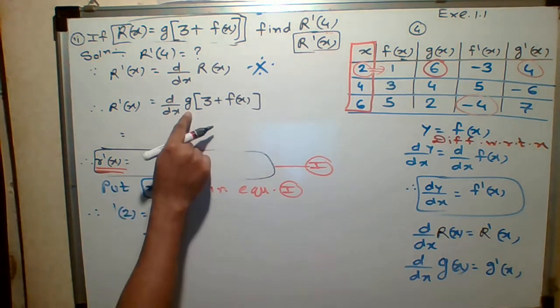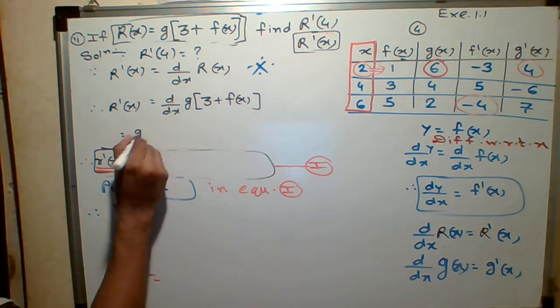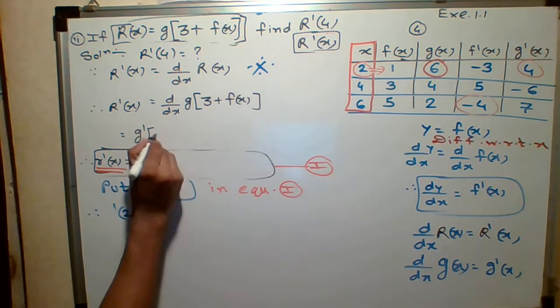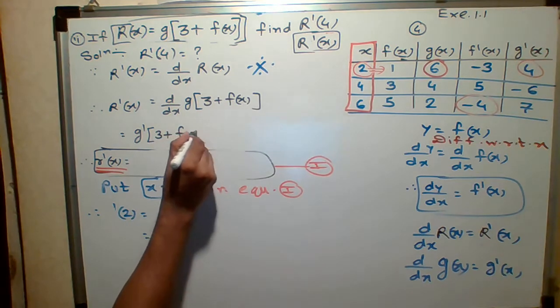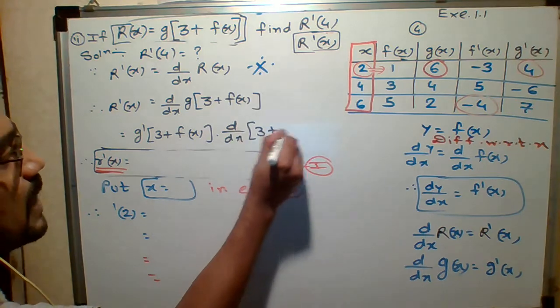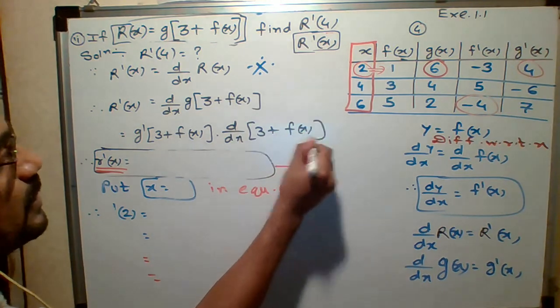So tell me what is derivative of G? Derivative of G is what? G dash. That is your first step. Under the term as it is. You don't have to see it. Under the term as it is. That is what? D by dx of what? 3 plus F of X.